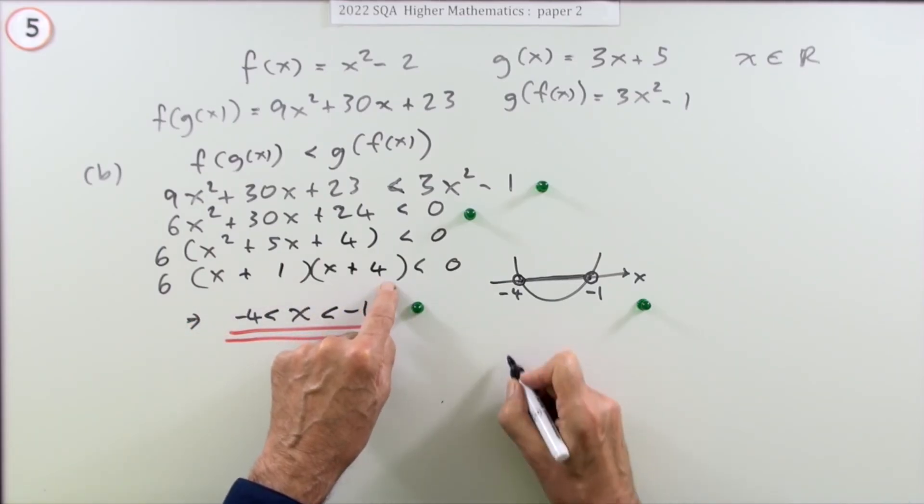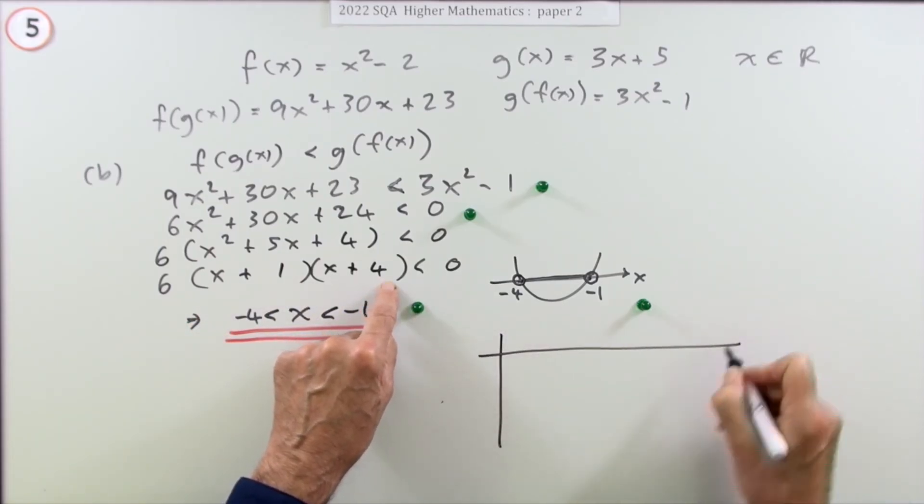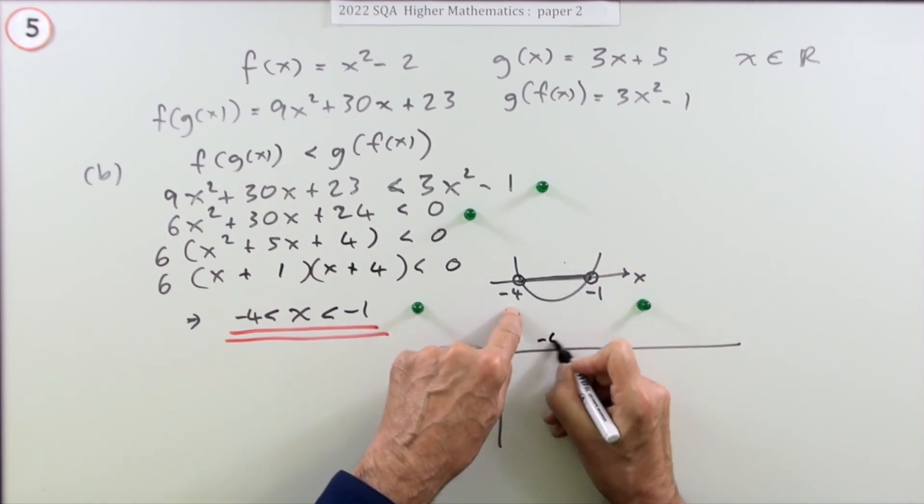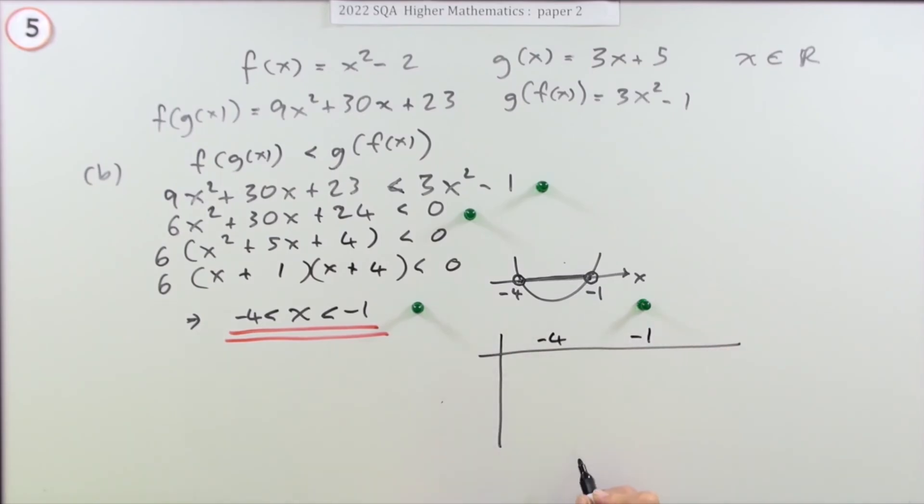The way to do that is to make a table - this is by far the quickest way. Your table would include those zeros, then think what happens in between. What have you got for all these factors?